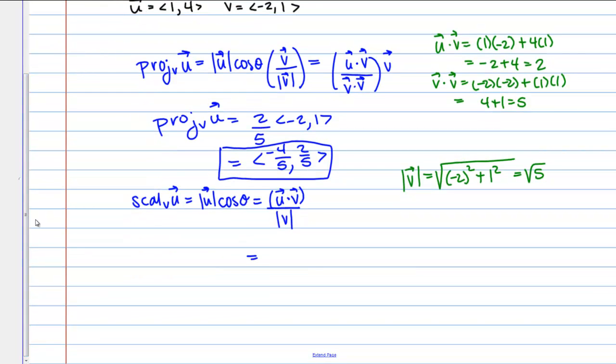If I plug into my formula, U dot V is 2, magnitude of V is square root of 5. The scalar component of vector U in the direction of vector V in this case is 2 over root 5.